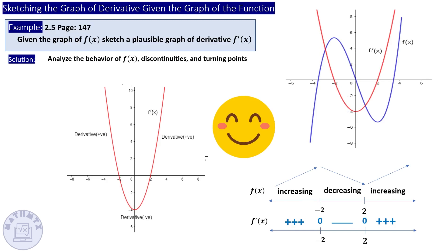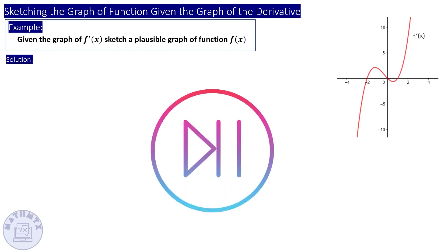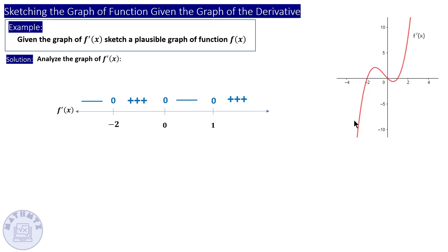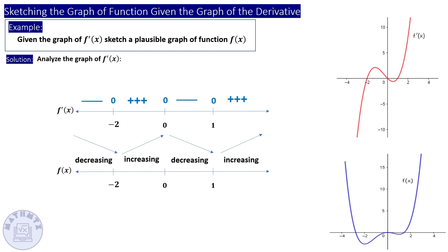The derivative will always be one degree less than the function. In the last example, given the graph of the derivative, can you sketch a plausible graph of the function? Try to pause the video and sketch f(x) first. In this question we do the opposite: since we have the derivative, identify where it's positive (above x-axis) or negative (below x-axis), and where it crosses the x-axis the slope is zero — meaning a turning point. If the slope is negative the function is decreasing; if positive, it's increasing.